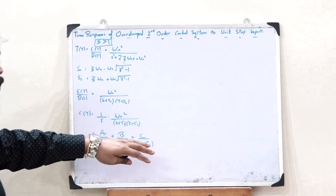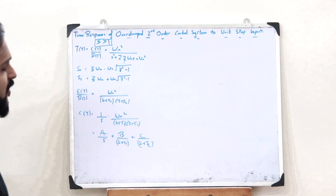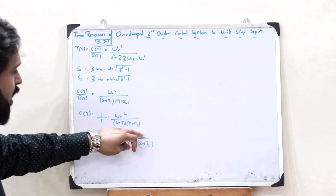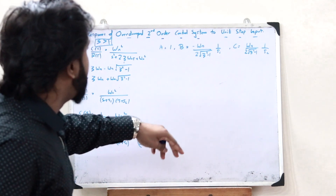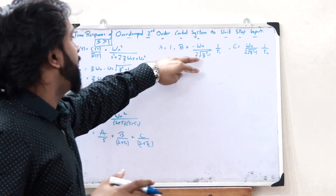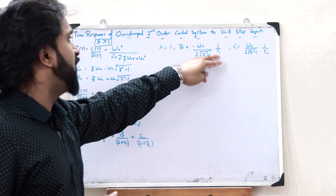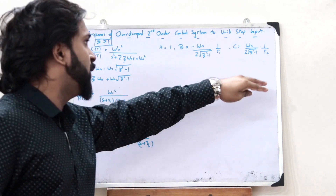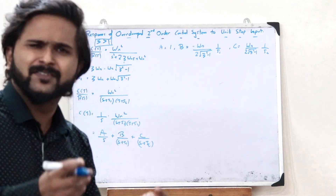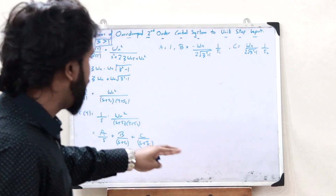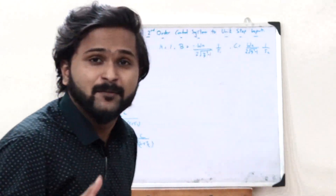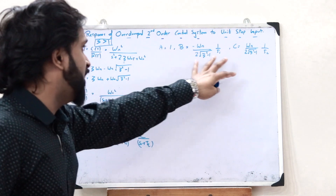Upon taking the LCM and equating the numerator terms on both sides, we get three equations. Upon solving them, we get: A = 1, B = minus omega_N divided by 2 root of (zeta squared minus 1) times 1/S1, and C = omega_N divided by 2 root of (zeta squared minus 1) times 1/S2. If you want to know how to solve this, I have explained it in detail in previously uploaded videos.